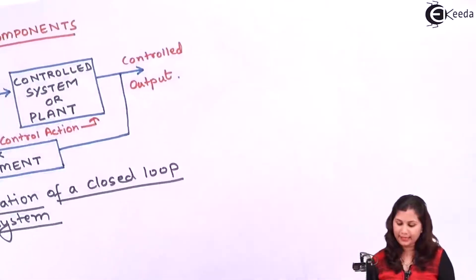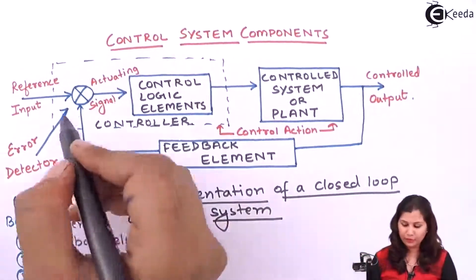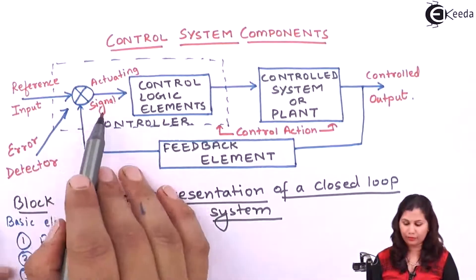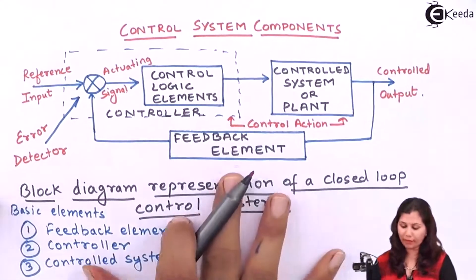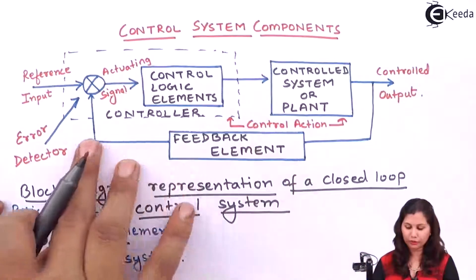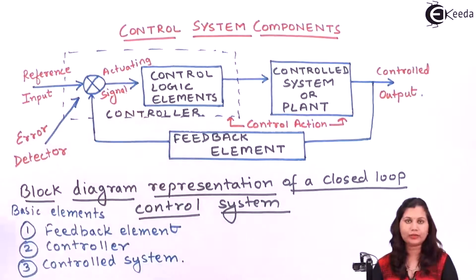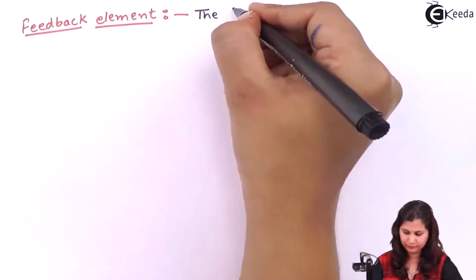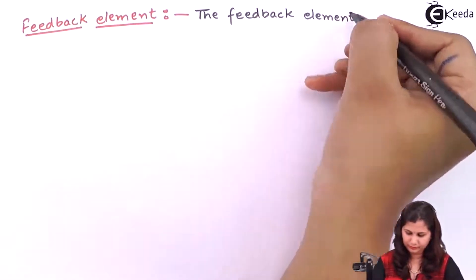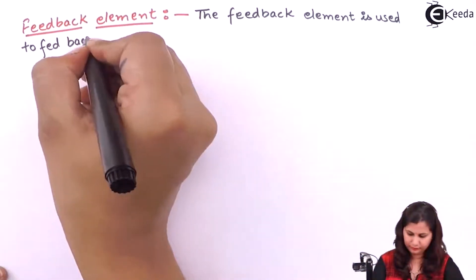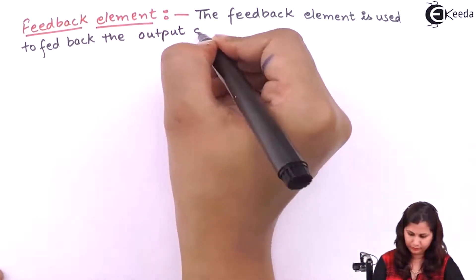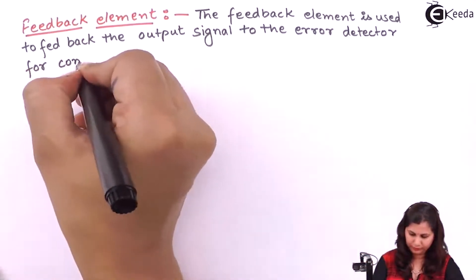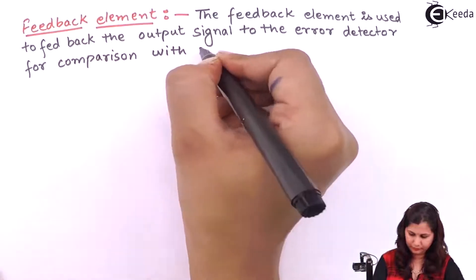The feedback element is used to feedback the output signal to the error detector, so that this error detector can use this feedback signal for comparison. So the function of this feedback element is to feed back this output to the error detector for the comparison process.